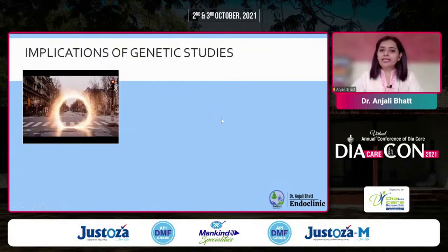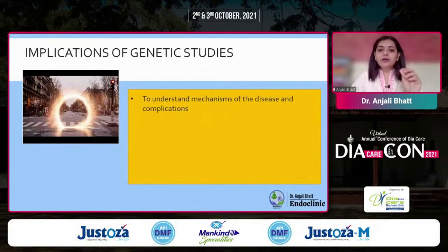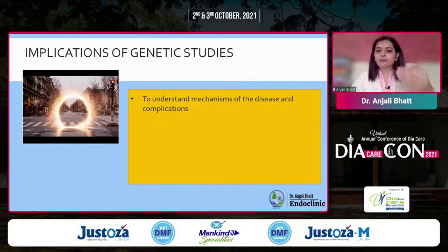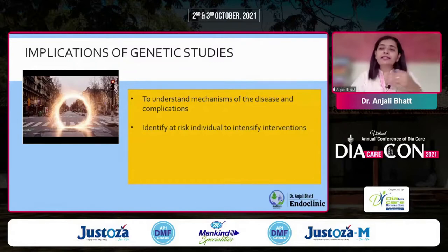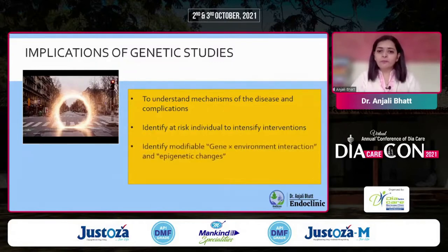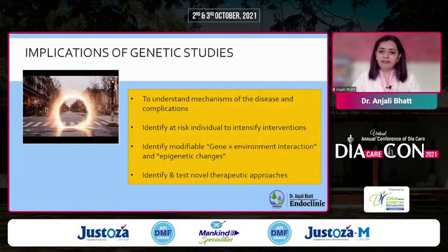Coming to the clinical implications of genetic studies: we better understand the mechanism of disease when we study genes — more genetic information means more understanding of how a disease affects us and how we can modify it. We can identify at-risk individuals; we don't have to manage everybody to an HbA1c of 6.5 — we can target those at higher risk of complications. We can identify modifiable gene and environmental effects, epigenetic changes, and favorably affect them for novel therapeutic approaches in the future.